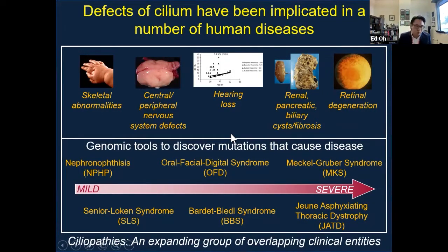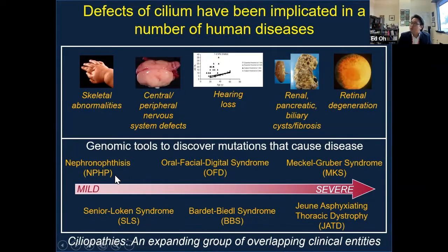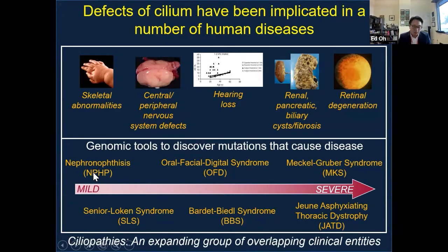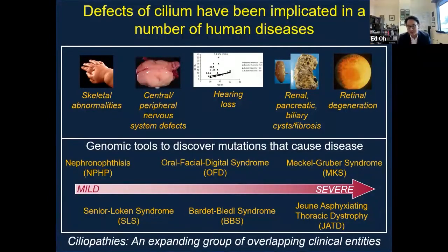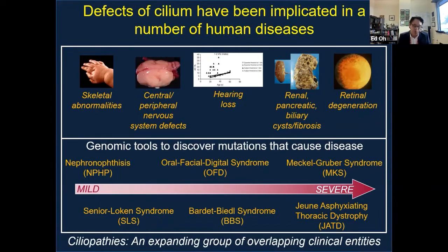A key part of these initial discoveries in humans was the use of next generation sequencing tools, which allowed us to identify genes giving rise to human conditions. In various reviews, we've listed and categorized these genes and diseases as being either relatively mild — where loss of one gene causes one organ system to fail — to relatively severe, where removal of certain genes gives rise to death or death shortly after birth.